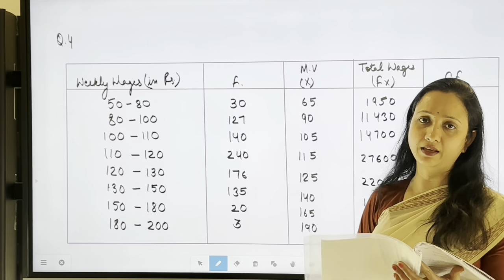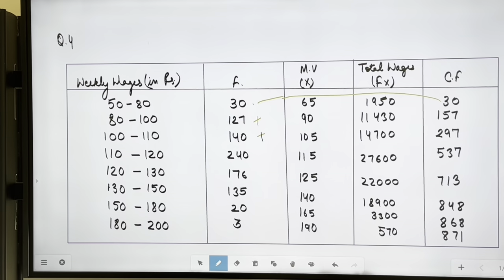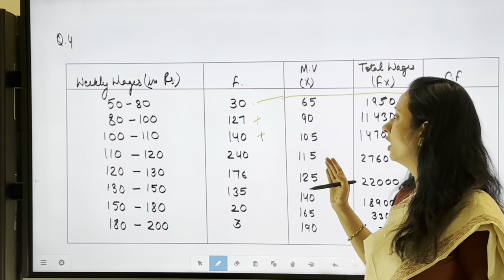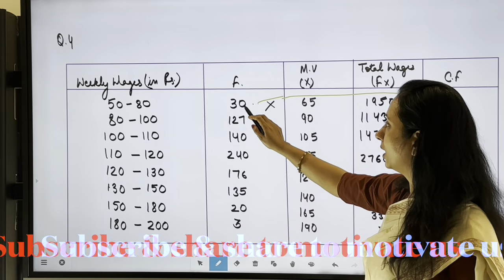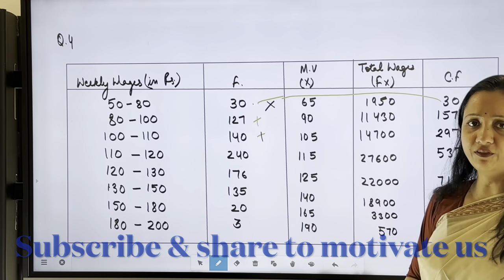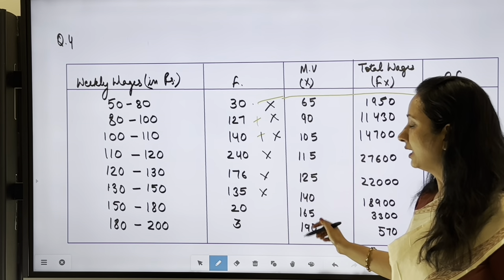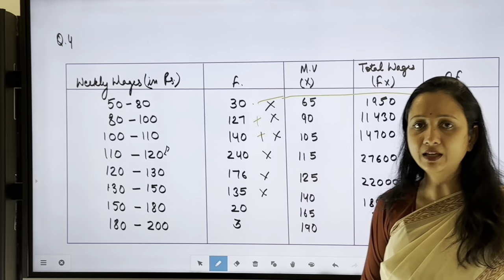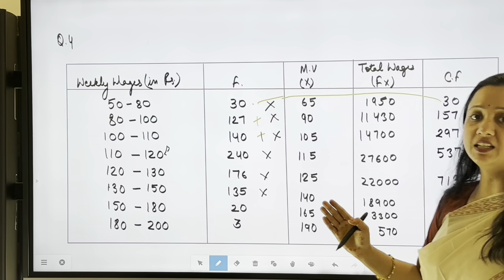First, we find the median by calculating cumulative frequencies: 30, 30+127=157, and so on. The total N = 871. We also find mid values and total wages by multiplying mid values by frequencies, to determine total wages above and below rupees 120.